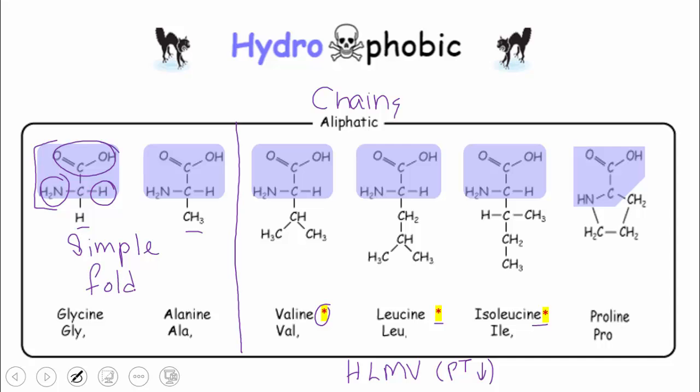Simple chains are the first two amino acids mentioned here, the glycine and alanine, as obvious in their structures. Now the special characteristic about simple proteins is that they are very easily folded when they are within a protein due to their small size. And if you look at glycine specifically, its side chain is only a hydrogen bond, making it the simplest amino acid in our body.